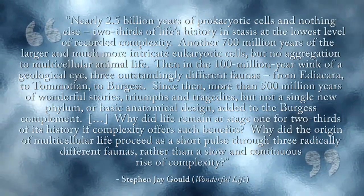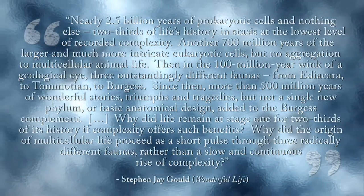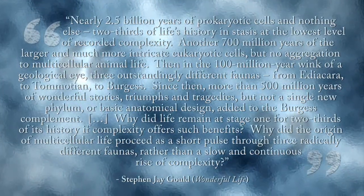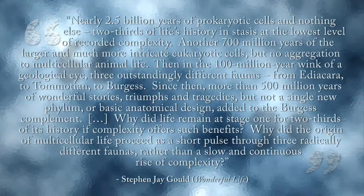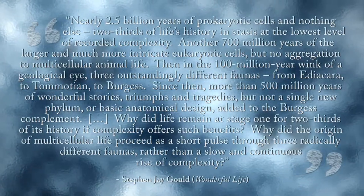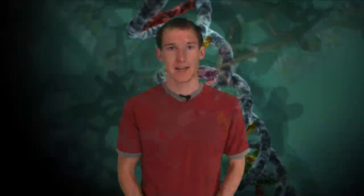Why did life remain at stage one for two-thirds of its history if complexity offers such benefits? Why did the origin of multicellular life proceed as a short pulse through three radically different faunas, rather than a slow and continuous rise of complexity? Cambrian experts such as Mikhail Fadunkin have proposed explanations for why the Cambrian was more conducive to life's development, but at most they only clear up how such life could have survived, not how it might have developed. The Cambrian explosion thus remains one of the mysteries of macroevolution. Future geological discoveries may fill in the gaps, but so far science has been unable to satisfactorily explain why so many different phyla appeared in the Cambrian, and never again.